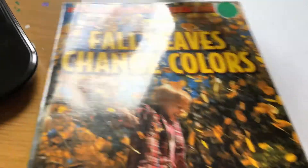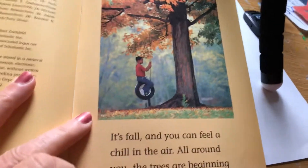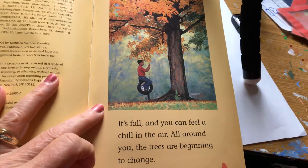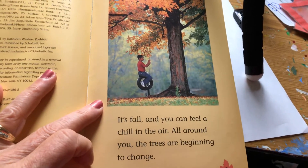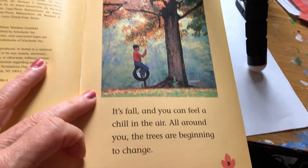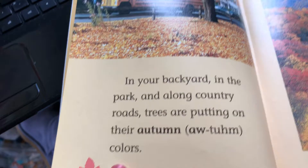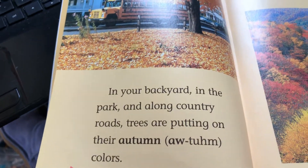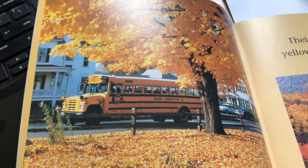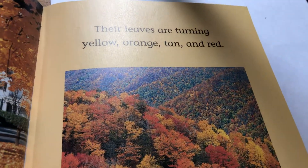The first thing I'm gonna do is read you a nice book. This book is called 'Fall Leaves Change Color' — it's one of my favorite books. Here we go: 'It's fall and you can feel a chill in the air. All around you the trees are beginning to change — in your backyard, in the park, along the country roads, trees are putting on their autumn colors.'